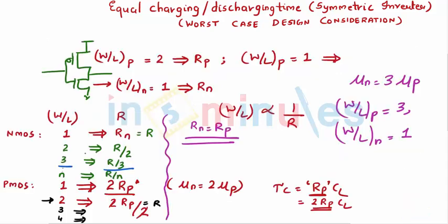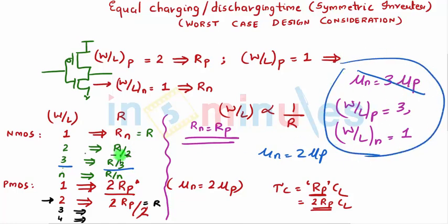So now we are set to fill this table. When it's 3, we know that mobility is still 2 in this example. We had assumed mobility as 2, this was just another case which we were considering, but all the analysis we have done when mu N is equal to twice mu P. So mobility 2 into the resistance upon the W by L, so 2R by 3. For 4, 2R by 4. For N, we just saw 2R by N. So this is the mobility, this is the W by L.